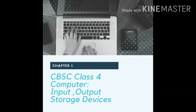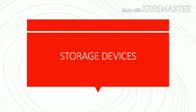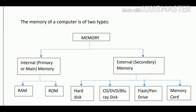Good morning to all my dear children. Till now in this chapter we were learning about input devices, output devices, and storage devices. Today in this video we will be learning about storage devices. As in our previous video, we have seen the different types of storage devices. The storage devices are mainly internal storage devices and external storage devices. The memory of the computer is divided mainly into two segments: internal memory, also known as main memory or primary memory, and external or secondary memory. Internal memory is again divided into RAM (random access memory) and ROM (read-only memory).